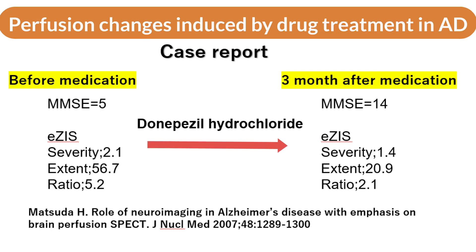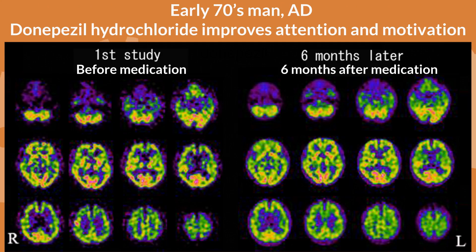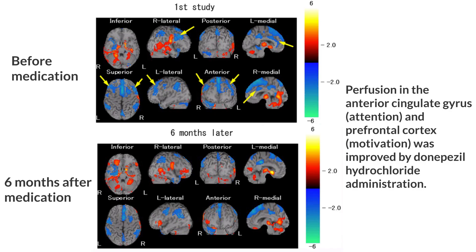Changes in brain perfusion due to drug treatment of Alzheimer's disease have been reported. In cases that responded to donepezil hydrochloride, severity, extent, and ratio were all reported to decrease. In a case of a man in his early 70s, donepezil hydrochloride improved his attention and motivation. In EZI, before administration, perfusion in the anterior cingulate gyrus (related to attention) and the prefrontal cortex (related to motivation) was decreased. After six months of administration, the decrease in perfusion in these areas disappeared, indicating improved perfusion.